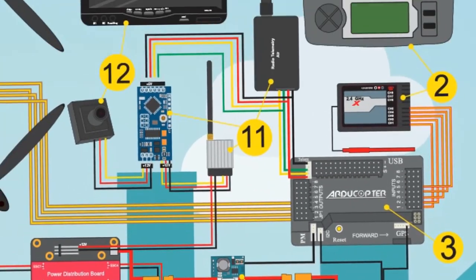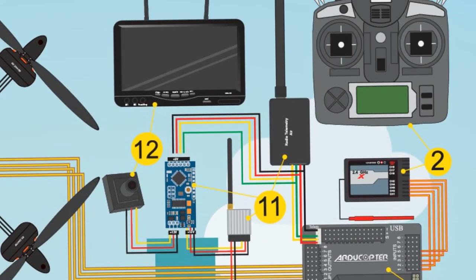Telemetry is used to collect data from mounted sensors. The data flow is bidirectional. It can send data about the flight to a ground station and send commands to the flight controller.